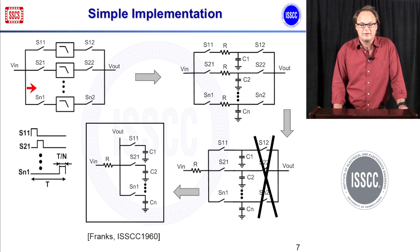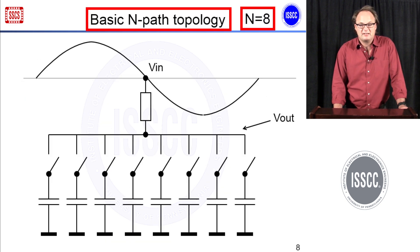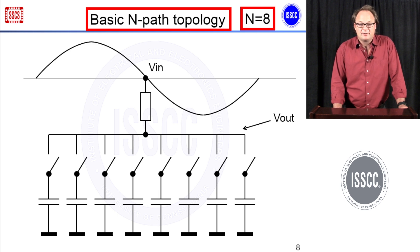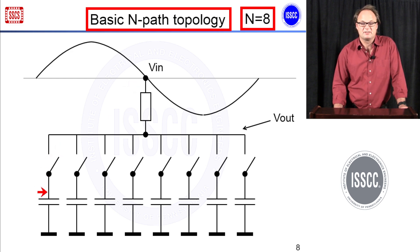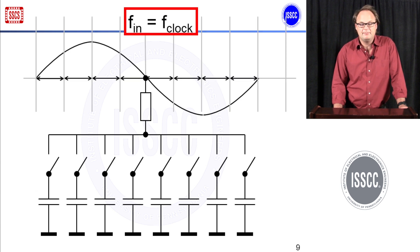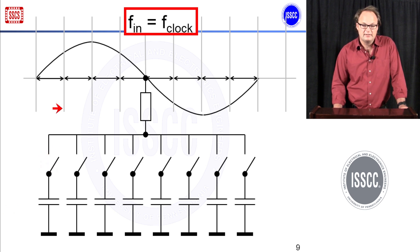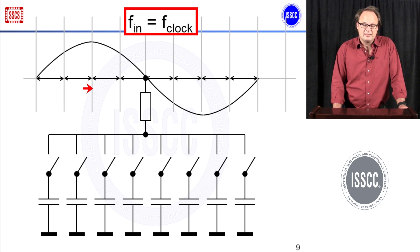You may intuitively wonder how this works as a bandpass filter, so I would like to explain things in the time domain. Let's take this topology — to make things easier I made it N=8, so instead of four paths I now take eight, but it's easier to understand this way. The input signal is connected at this side of the resistor; there are eight switches connected to eight capacitors. Suppose the input frequency is exactly equal to the clock frequency.